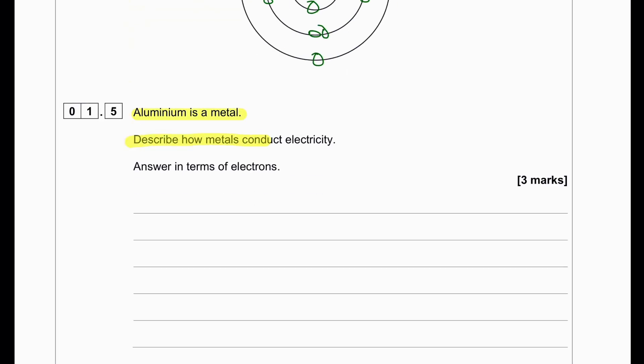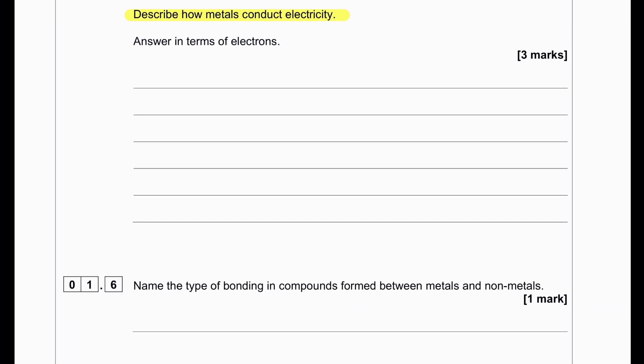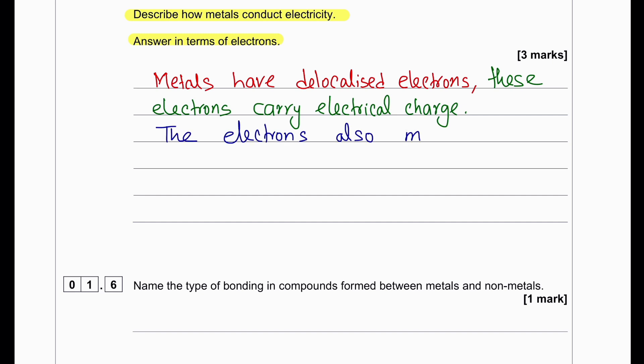Aluminium is a metal. Describe how metals conduct electricity. Any metallic structure has delocalized electrons in them. Those delocalized electrons are able to carry charge and move through the structure or aluminium metal, and thus they can conduct electricity.